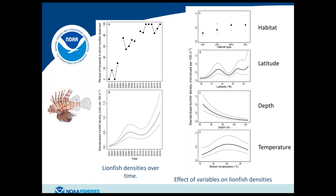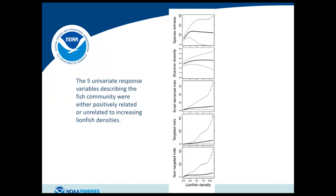Lionfish density showed a strong relationship with habitat type, being almost twice as high on high relief ledge transects compared to pavement. Density varied across latitudes, being lowest in the south and highest in North Carolina. It was negatively related to depth — an order of magnitude greater at 45–50 meters compared to 125 meters. It was also positively related to bottom water temperature up to about 20 degrees C, after which density appeared invariant or negatively related.